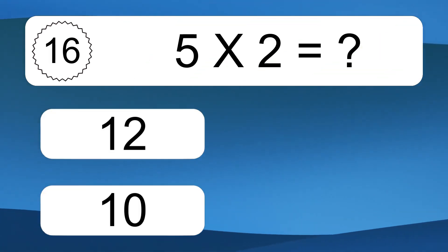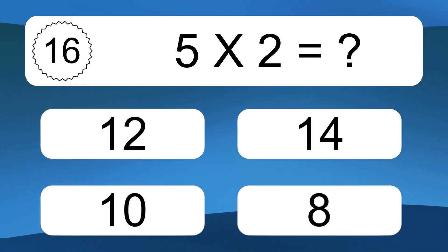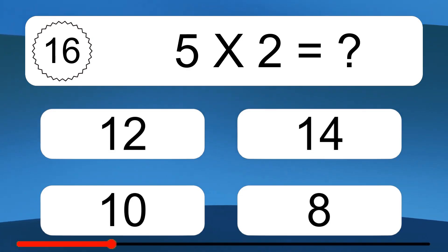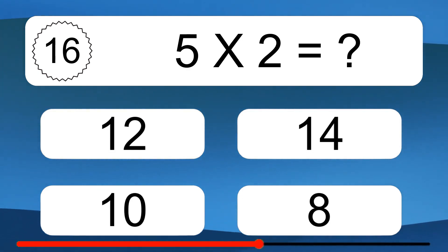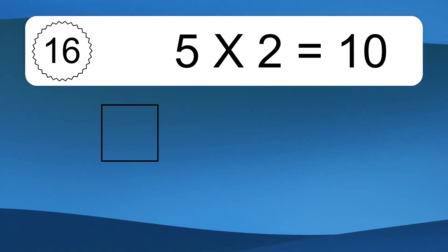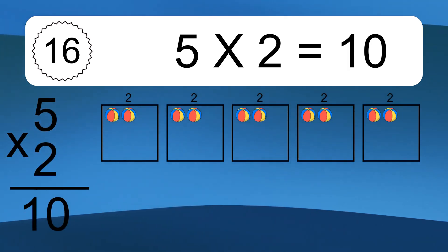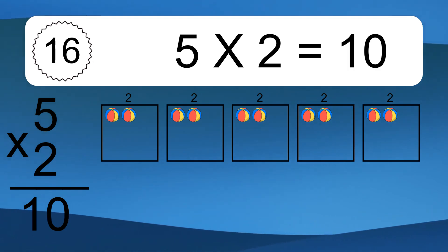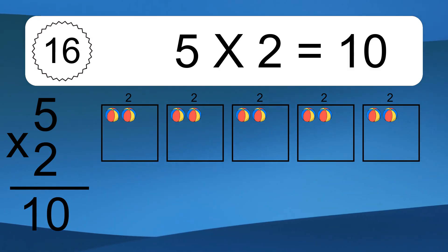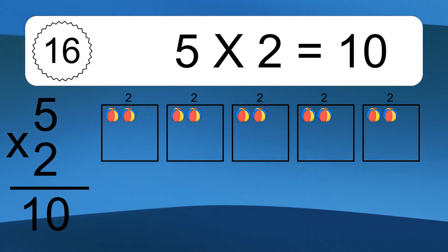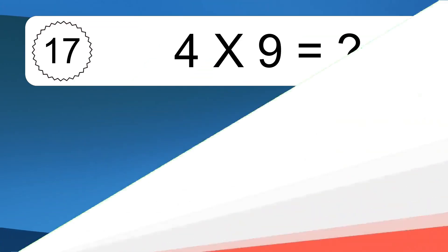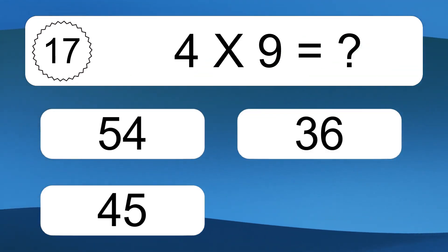5 times 2 equals 10. We have 5 boxes and each box has 2 colorful balls inside. If you count all the balls in all the boxes together, you will have 5 times 2 balls. This equals 10 balls.